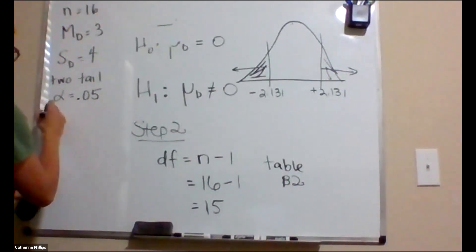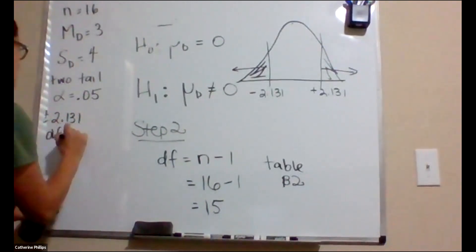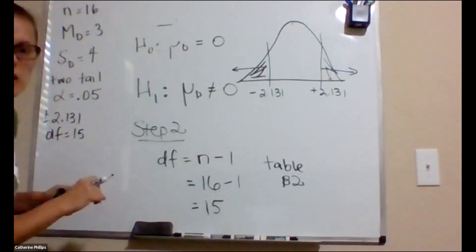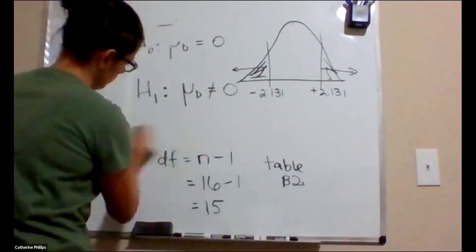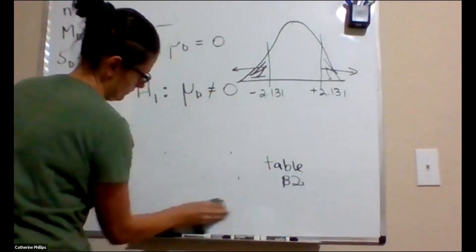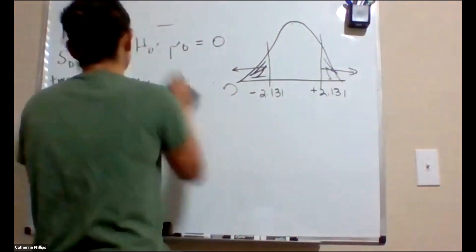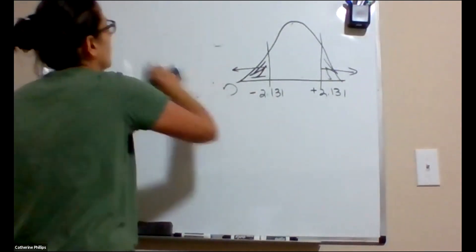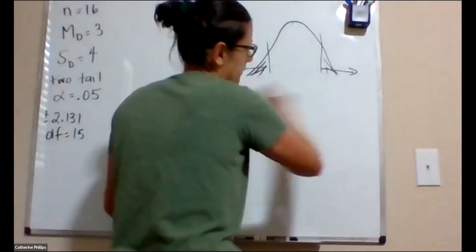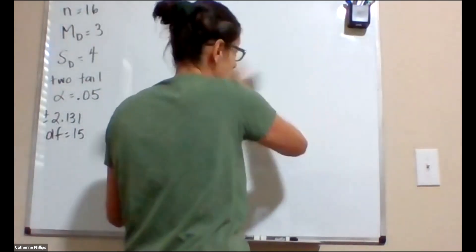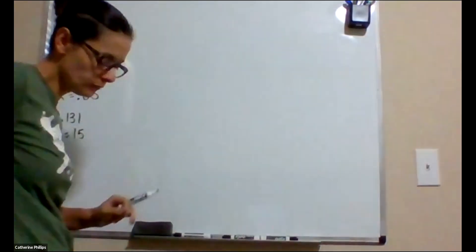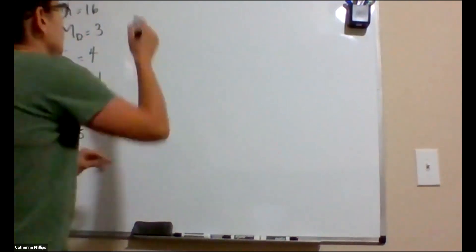I'm going to write those over here, plus or minus 2.131, and my degrees of freedom was 15, because I'm going to need those later. You don't necessarily have to erase it because you don't have to rewrite it because you're not erasing.